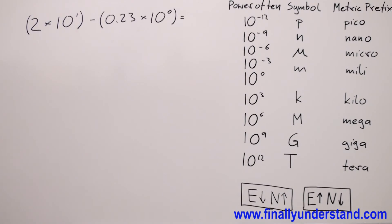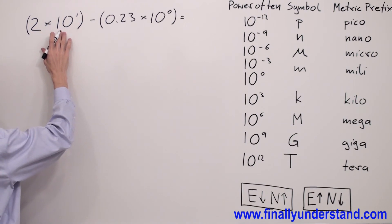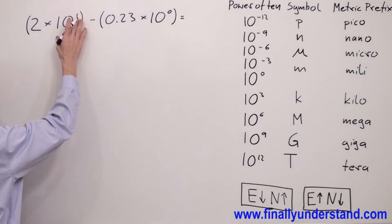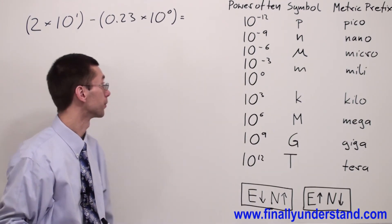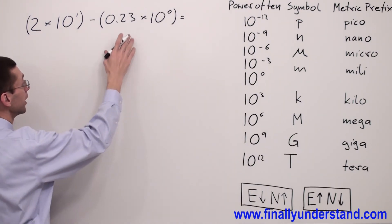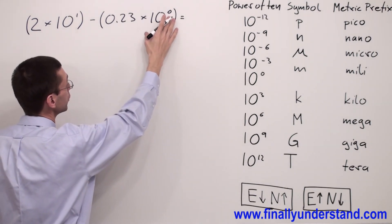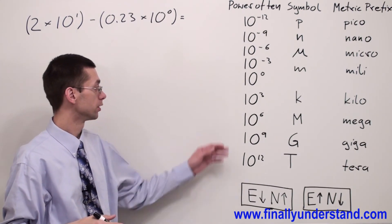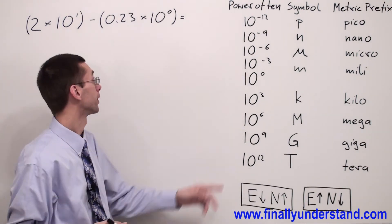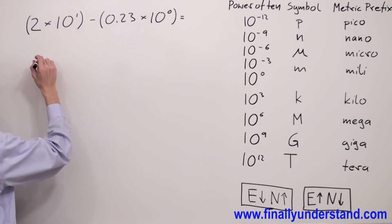Let's take a look at the second example. Look at the first number — it has a power of 10 with exponent 1. We have to express the answer in engineering notation. The second number has a power of 10 with exponent 0. Since 10 to the 0 is acceptable in engineering notation, I'm going to convert 10 to the 1 to 10 to the 0.